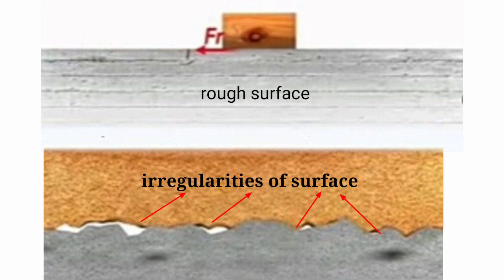Even a smooth looking surface has a large number of irregularities. These irregularities get interlocked when one object tries to move over another. And this is the reason that opposes the motion of a body and causes friction.